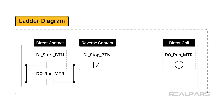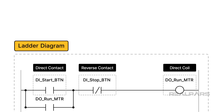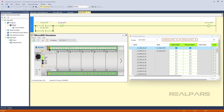In this video, I introduced the basic principles of the Ladder Diagram programming language and the most common bit instructions used in Ladder Diagram. At this stage, you know what a direct contact, reverse contact, and direct coil are. You also know how they work and how they can be combined on a rung to create complex Boolean logic.